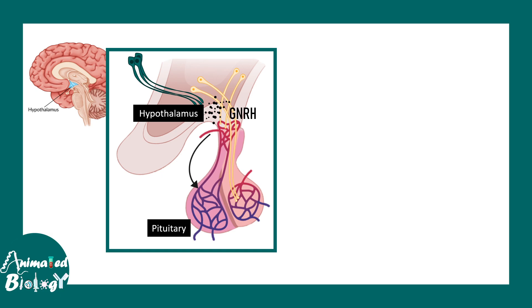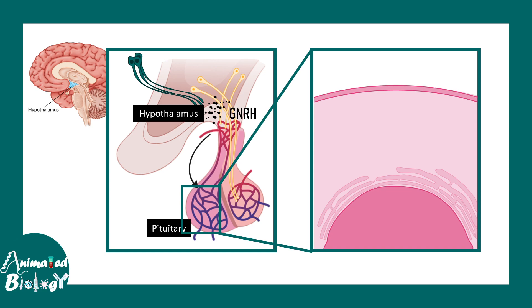Here we are looking at the hypothalamus and pituitary. In the hypothalamus there are GnRH neurons which secrete GnRH at the synaptic terminal, and that gets released into the portal system and reaches the pituitary. In the pituitary there are different kinds of cells; one type is the gonadotroph cells which secrete the gonadotrophins.